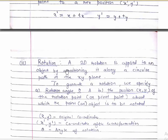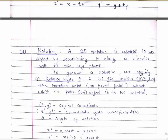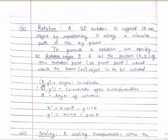A 2D rotation is applied to an object by repositioning it along a circular path. To generate a rotation we specify three things: first, a rotation angle theta; second, the original coordinate position x comma y; and third, the new view of how the object will be placed. x comma y are the original coordinates, x-dash comma y-dash are the coordinates after transformation, and theta is the angle of rotation.